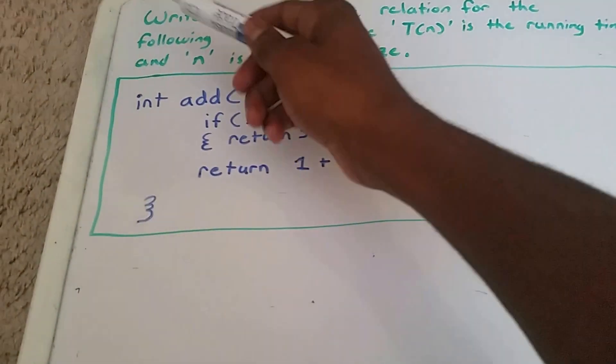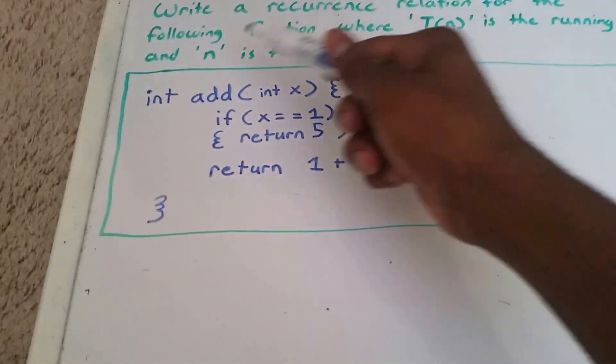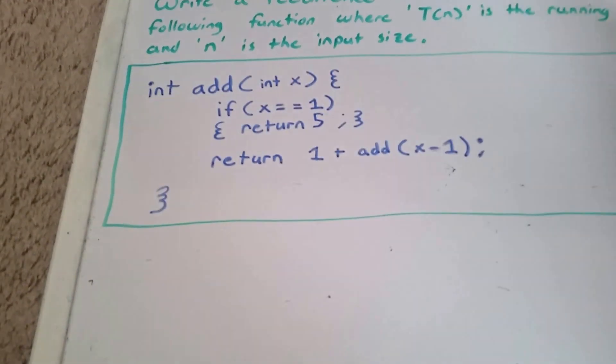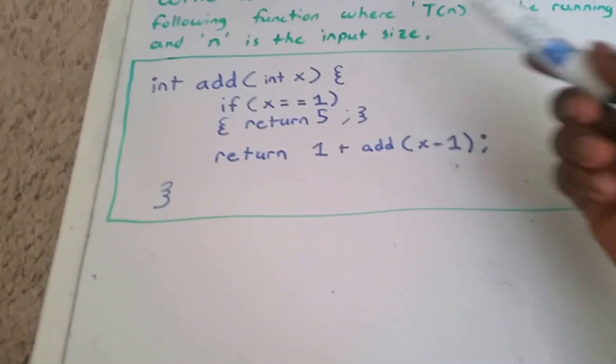Guys, in this video we want to write a recurrence relation for the following function, where T(n) is the running time and n is the input size.